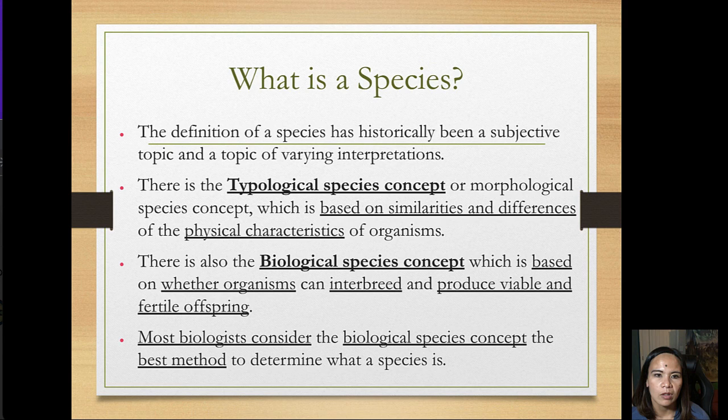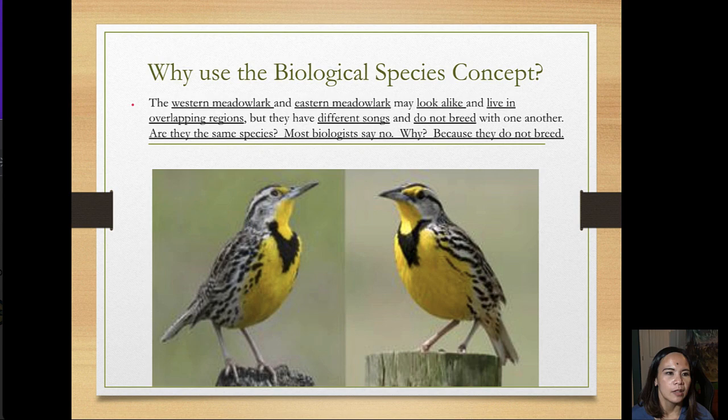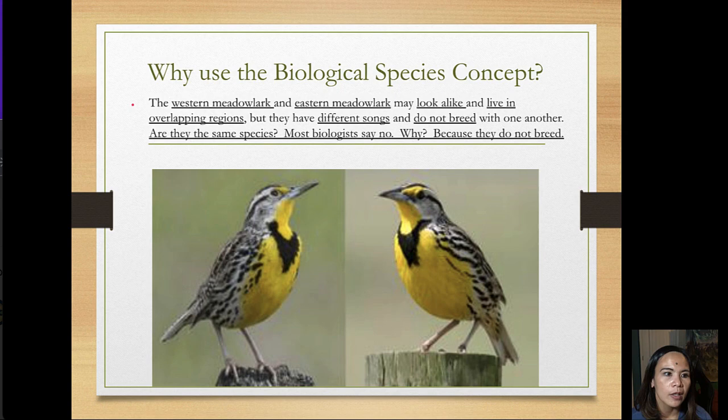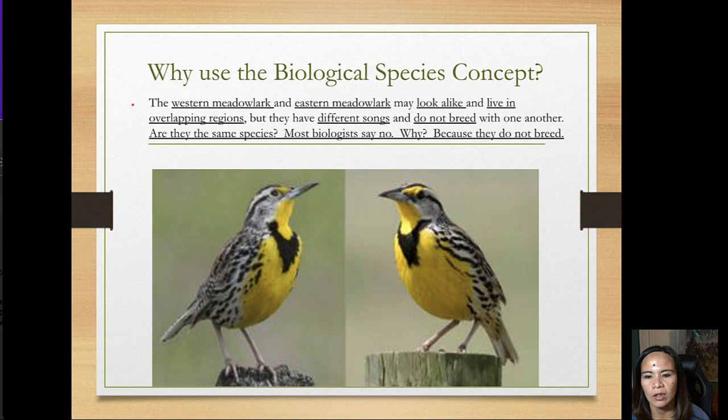The biological species concept is based on whether an organism can interbreed and produce viable and fertile offspring. For example, the western meadowlark and the eastern meadowlark look alike and live in overlapping regions, but they have different songs and do not breed with one another. Most biologists say they are not the same species because they do not interbreed.